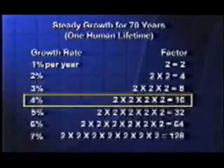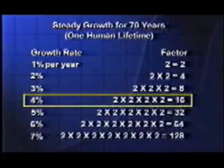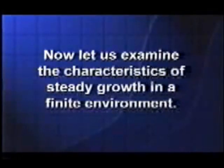There's another beautiful consequence of this arithmetic. If you take 70 years as a period of time — roughly one human lifetime — then any percent growth continued steadily for 70 years gives you an overall increase by a factor that's very easy to calculate. For example, at four percent per year, you find the factor by multiplying four twos together — it's a factor of 16.